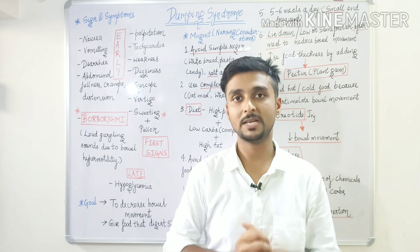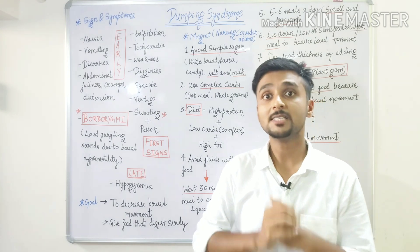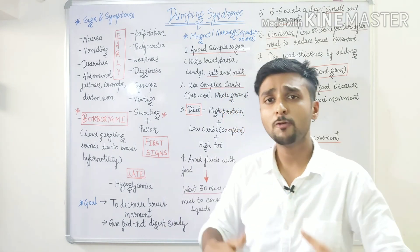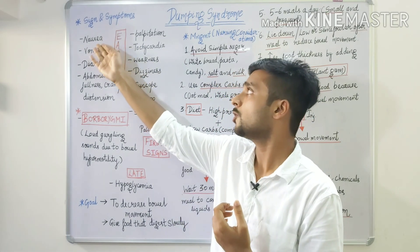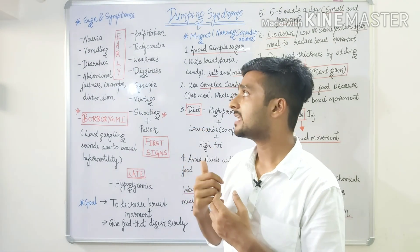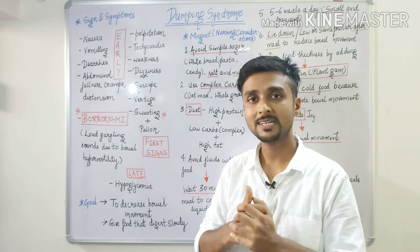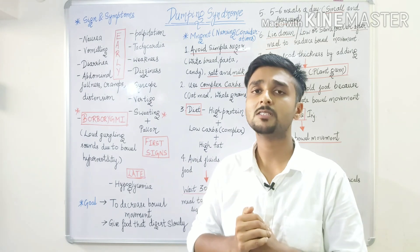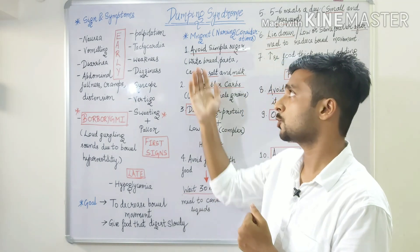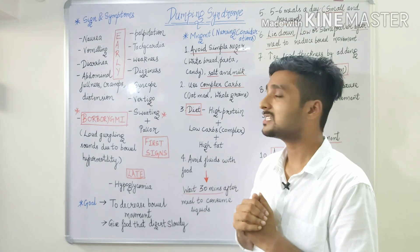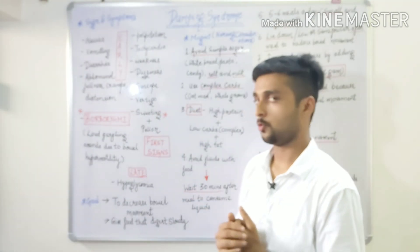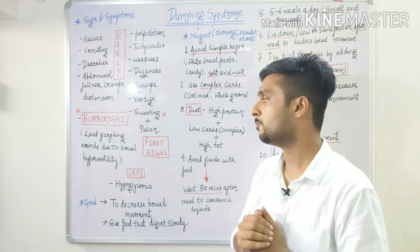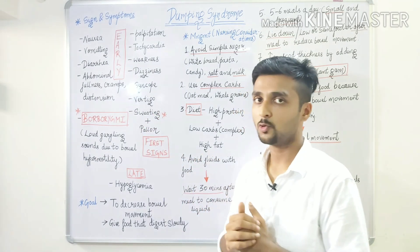Now let's look at the signs and symptoms related to dumping syndrome. Since the hypertonic food pulls the fluid, there will be a lot of fluid accumulation in our small intestine, leading to vomiting, diarrhea, abdominal fullness, cramps, and distension. Because blood volume is reduced and the sympathetic nervous system is activated, the patient experiences palpitations, tachycardia, weakness, dizziness, syncope, vertigo, sweating, and pallor. These are important early signs of dumping syndrome.